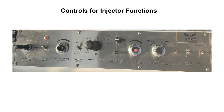Then we have injector pressure adjust — if we want to increase the speed, we will adjust the injector pressure from this knob. Then we have the injector motor displacement adjust — if we want to adjust the torque and speed, we can use this knob in some units.